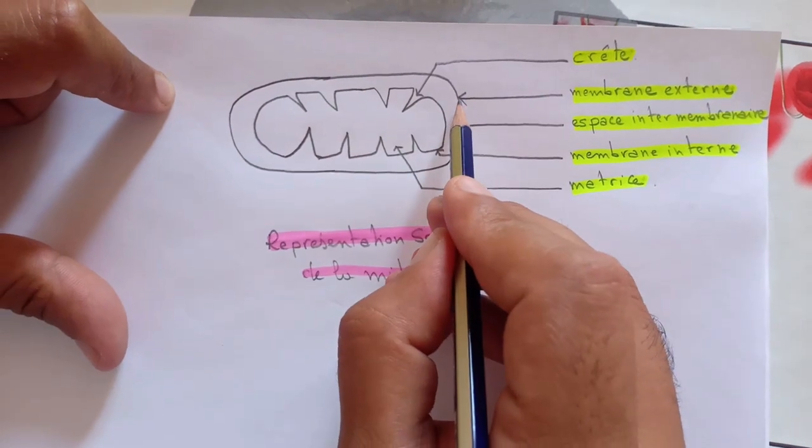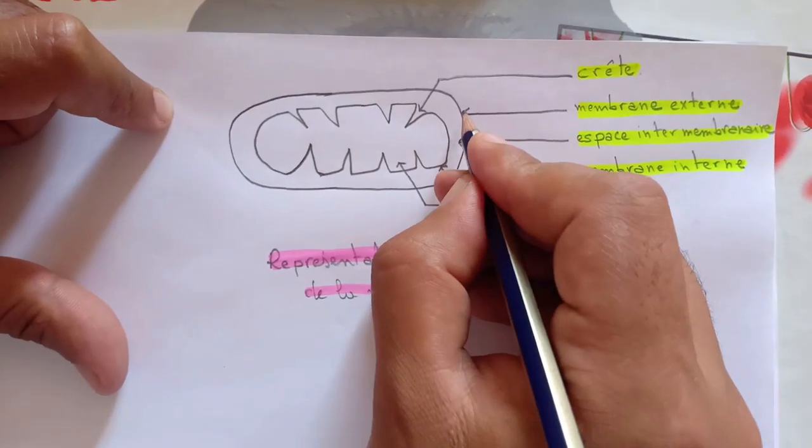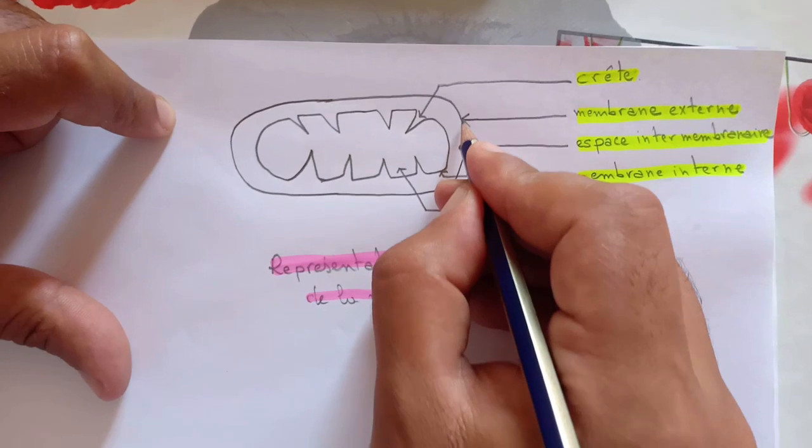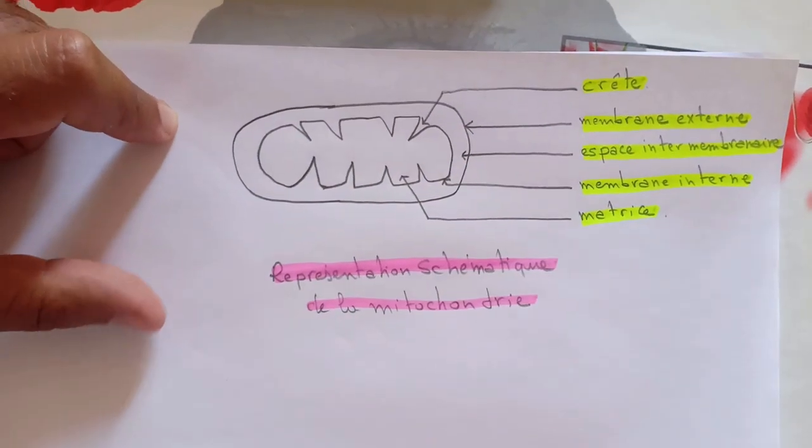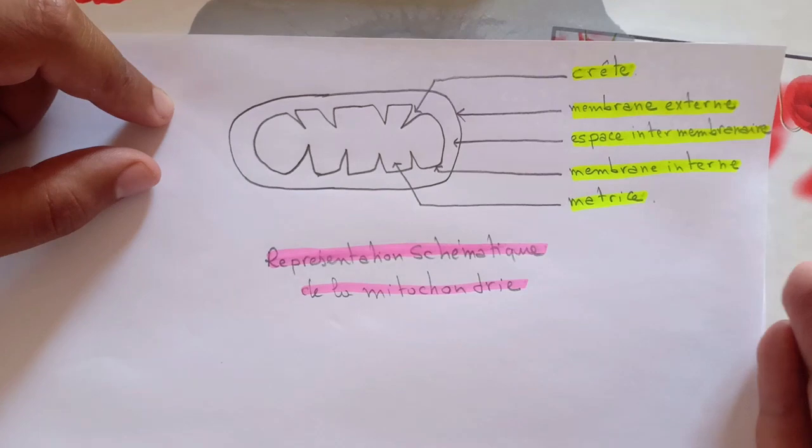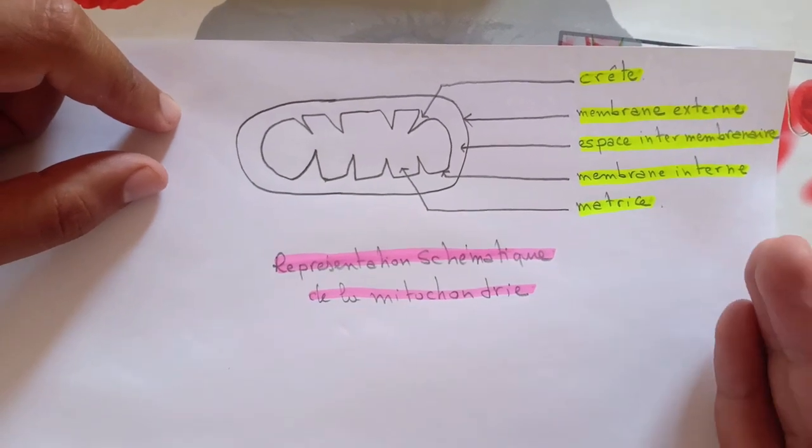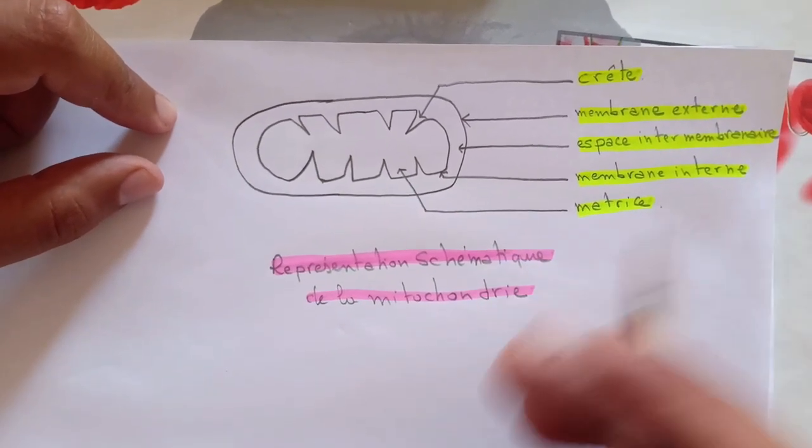Et la tête de la flèche ne doit pas franchir l'élément sélectionné. Si je veux faire la légende de la membrane externe, la tête de la flèche ne doit pas franchir la membrane externe. J'espère que c'est clair, et vous pouvez me laisser vos commentaires ou bien vos questions dans la partie des commentaires.